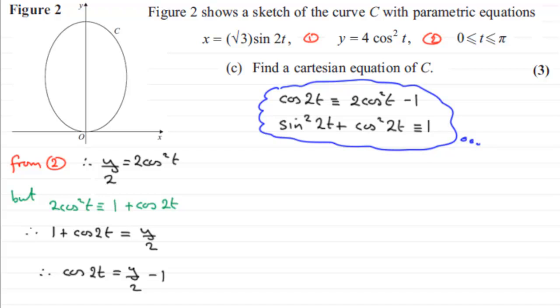And what I'd like to do is simplify this. So if we just come down here, I can put this all over 2. So we could say that therefore cos 2t is going to be equal to—well, if I have a common denominator of 2, then you're going to have y there and minus 2 there.